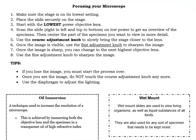When focusing your microscope, you must always follow these steps. Make sure the stage is on its lowest setting. Place the slide securely on the stage. Start with the lowest power objective lens. Scan the slide right to left and top to bottom on low power to get an overview of the specimen. Then center in on the part of the specimen that you want to view in more detail.